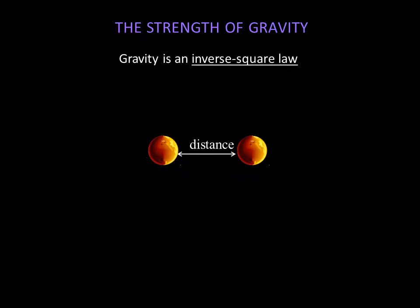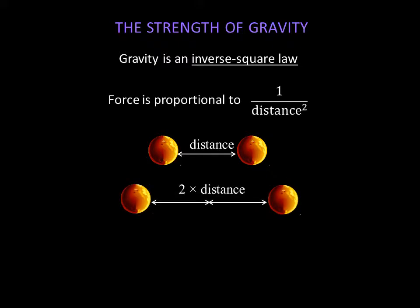Gravity is an inverse square law. The force decreases with the square of the distance. Move the objects twice as far away, and the force decreases by 4. Move them three times as far away, and the force decreases by 9.